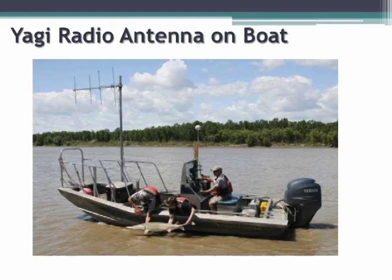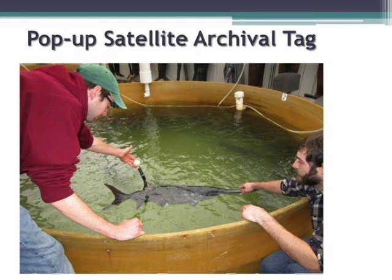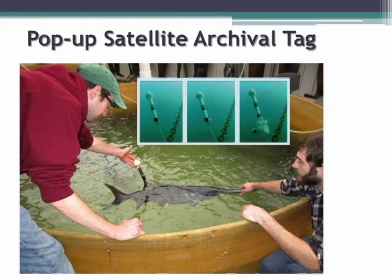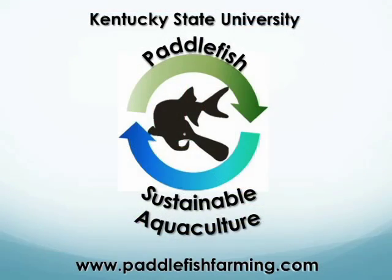A Yagi antenna is one way of finding radio tags over long distances. We'll also use pop-up satellite tags, which send a signal to a satellite that you can download to your computer. They store data, upload weekly, and record temperatures, depths, and other variables. At some point you can send a radio signal to release the tag. These are used commonly with sharks, tunas, and other marine species, and we think they'll be beneficial for us.